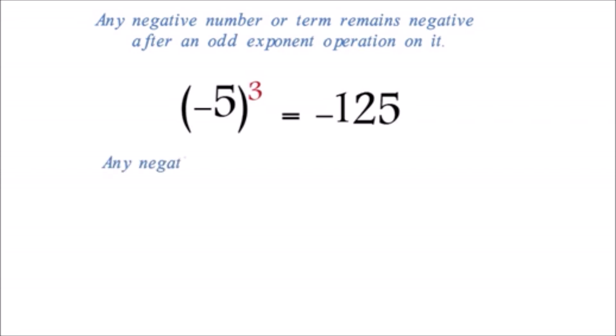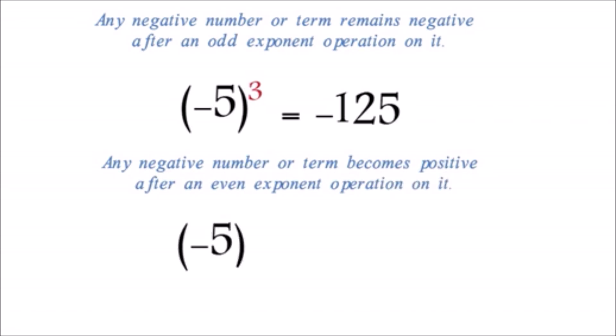Any negative number or term becomes positive after an even exponent operation on it. Example: negative 5 squared equals positive 25. Notice the exponent 2 is an even number.